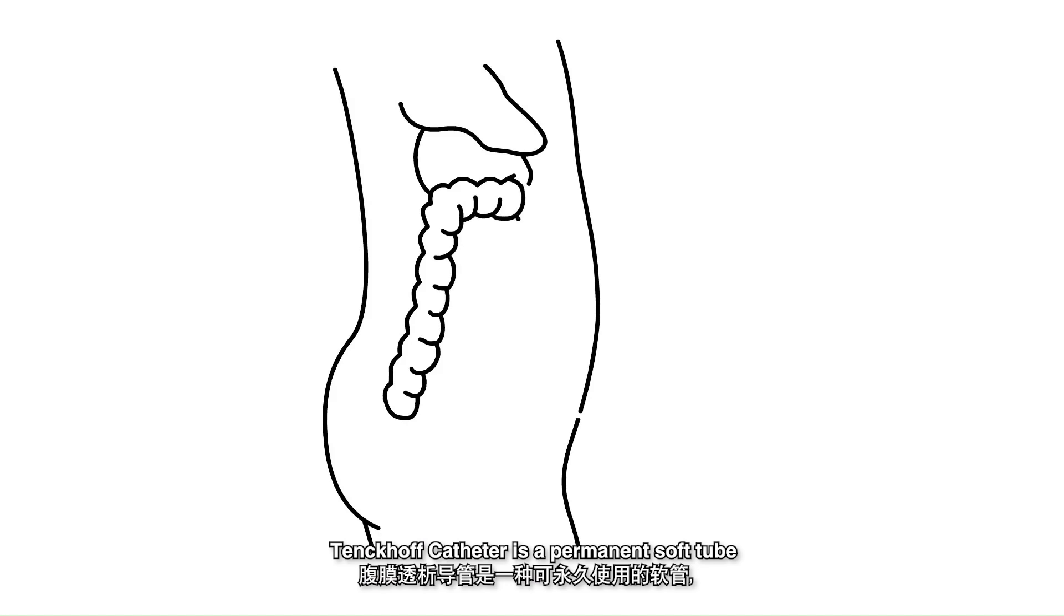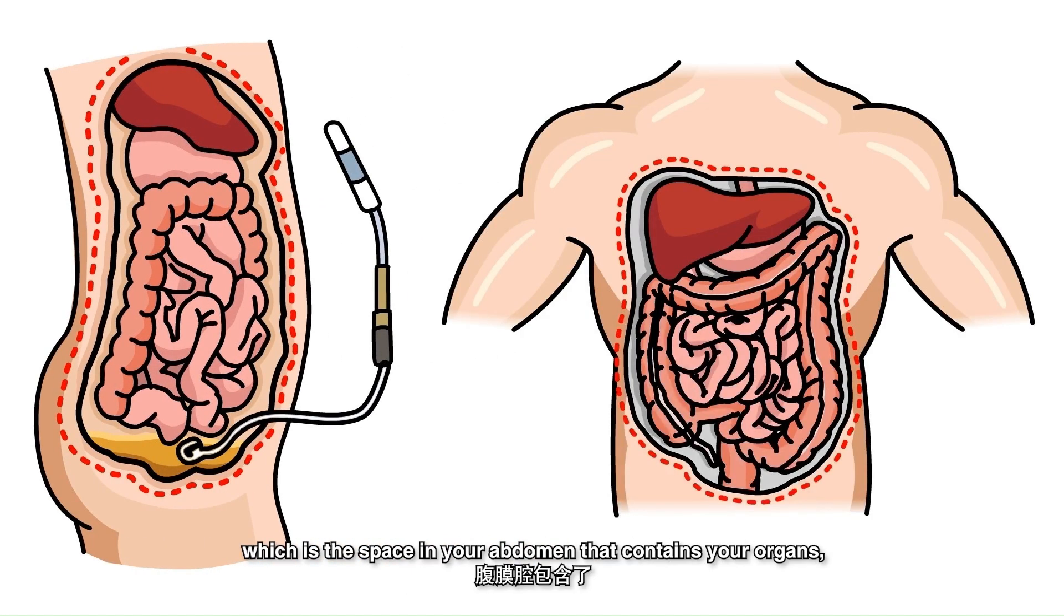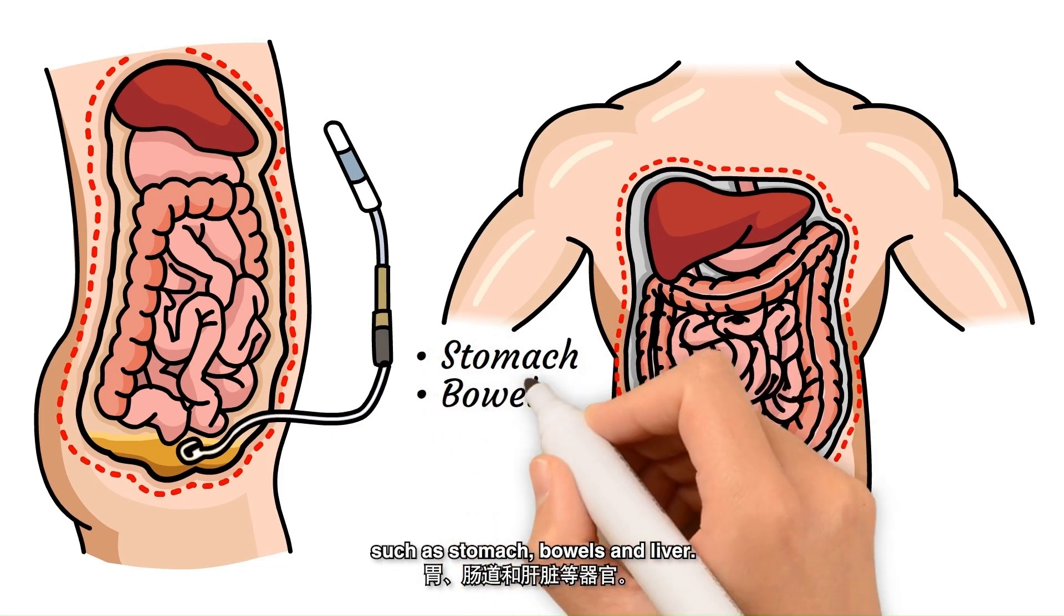Tenckhoff catheter is a permanent soft tube that is surgically placed in your peritoneal cavity, which is the space in your abdomen that contains your organs, such as stomach, bowels and liver.